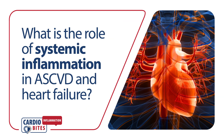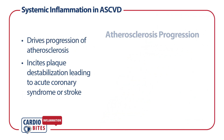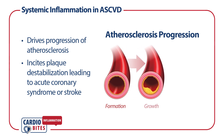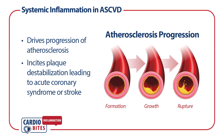What is the role of systemic inflammation in atherosclerotic cardiovascular disease and heart failure? Systemic inflammation drives the progression of atherosclerosis in stable disease and in the acute phase incites plaque destabilization leading to acute coronary syndrome or myocardial infarction and stroke, either embolic or ischemic cerebrovascular events.